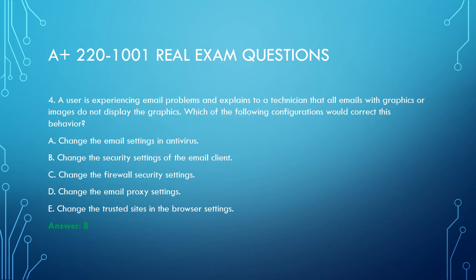Question 4. A small business has an open Wi-Fi network for employees but does not want customers to connect to the access point. A technician has been dispatched to address the business's concerns. Which of the following configuration settings should the technician change to satisfy the requirements? Select two. A. Default SSID. B. MAC filtering. C. NAT. D. QoS. E. Signal strength. F. Encryption. Answer: B, E.